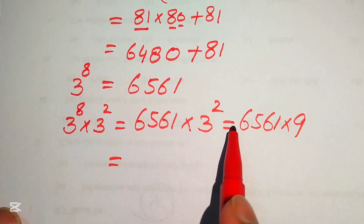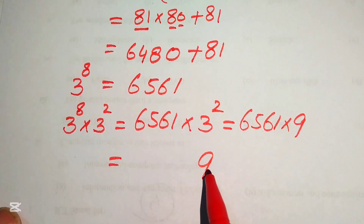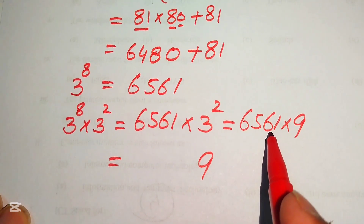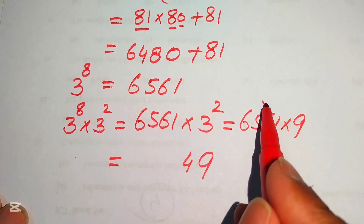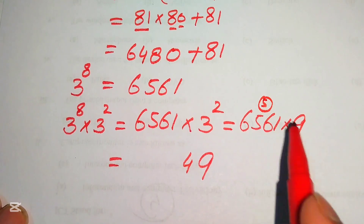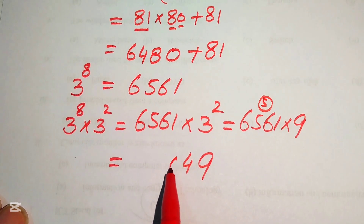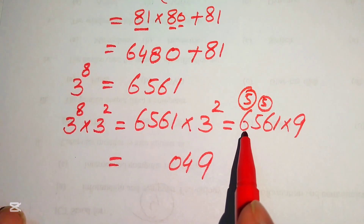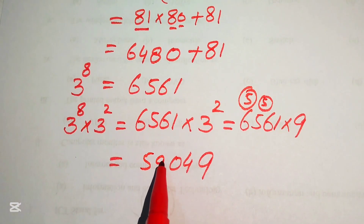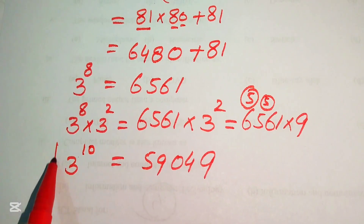Multiplying 9 by each digit of 6561: 9 times 1 is 9; 9 times 6 is 54, write 4 carry 5; 9 times 5 is 45, plus 5 is 50, write 0 carry 5; 9 times 6 is 54, plus 5 is 59. So 3 to the power of 10 equals 59049.